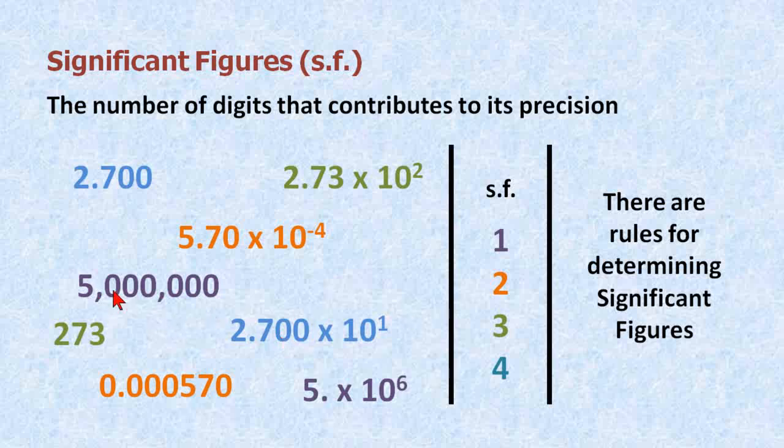Each color has two representations of the same number with the same number of significant digits. For example, 5 million can also be written as 5 decimal point times 10 to the 6. If we go over here to the green numbers, 2.73 times 10 to the 2 is the same as 273. And there are rules for determining significant figures.